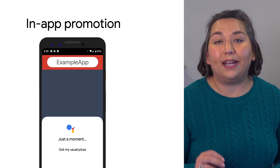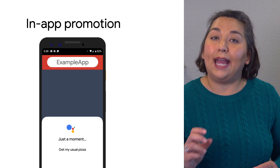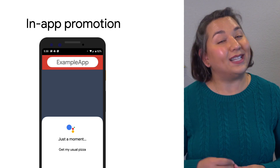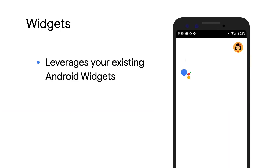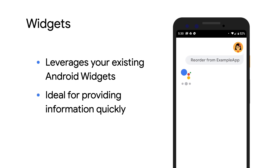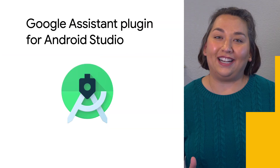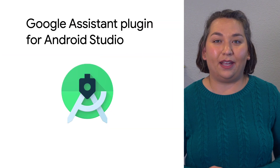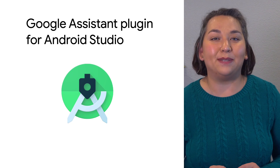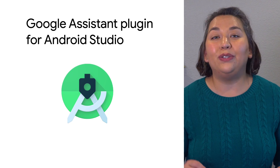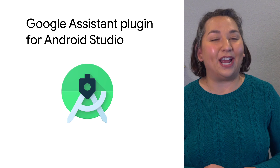You can utilize widgets as a way to fulfill a user's query. This option is great for situations that require a short or simple response — for example, a user who forgot what time a reservation is and wants to easily get that information. Finally, regardless of what you want to implement, you'll want to test out your App Actions before publishing your app. You can do that with Google Assistant's plugin for Android Studio.